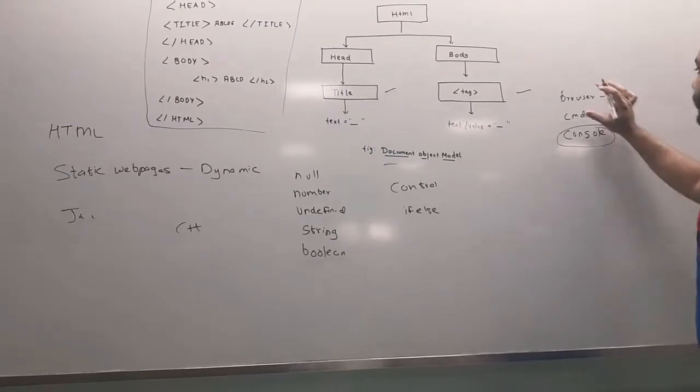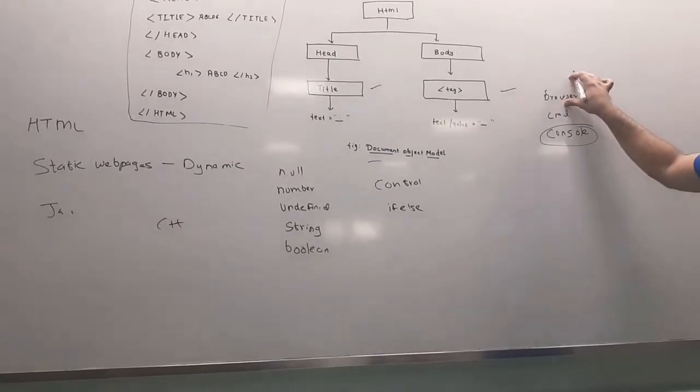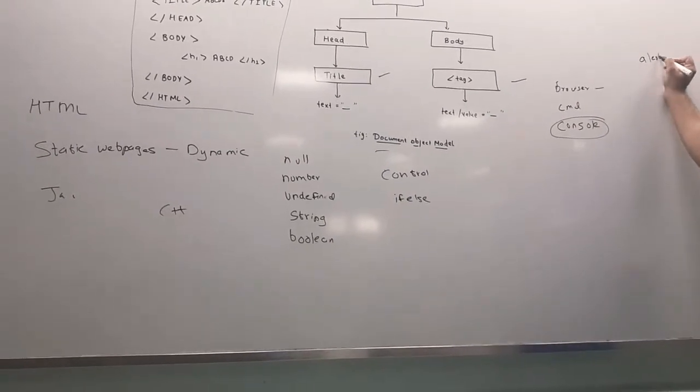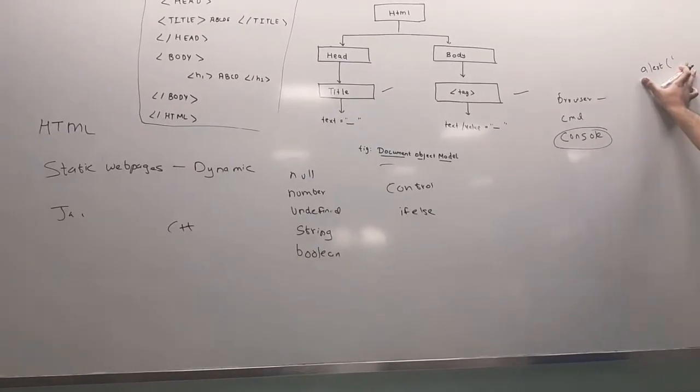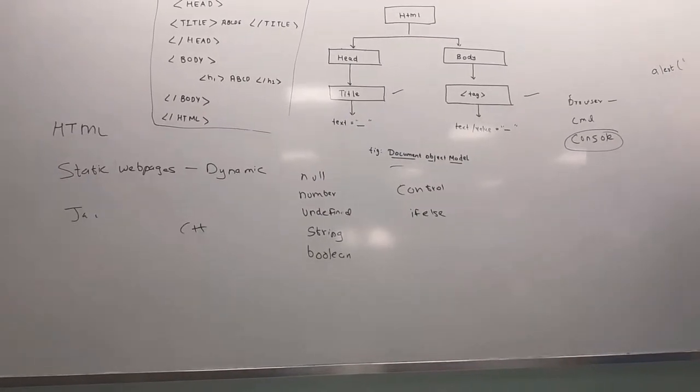In browser, if we want to print the JavaScript, there are two functions. One, we can use alert. In alert, if we use alert, it will give us a popup on the browser.